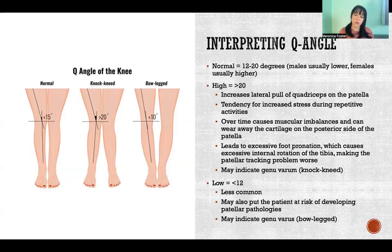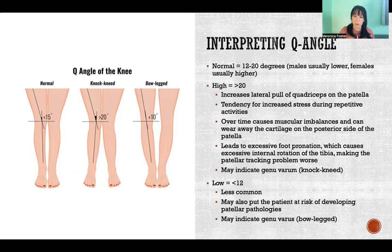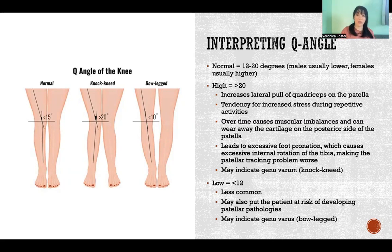A high Q angle can also lead to excessive foot pronation, which in turn causes excessive internal rotation of the tibia, making the patellar problem even worse. It's sort of like a feedback loop — a closed system where the pull of the quads on the patella causes the feet to pronate, which causes the patella to be in an even worse position.